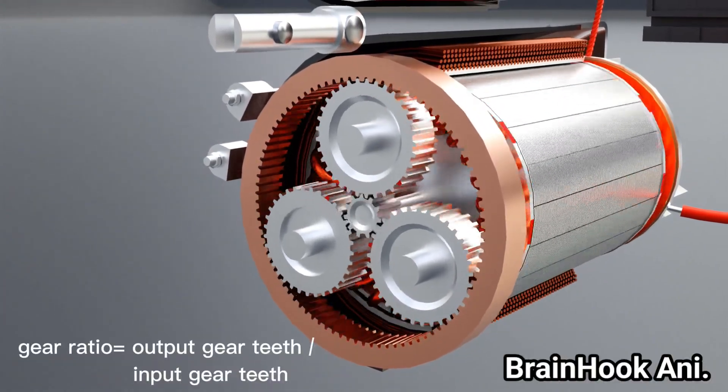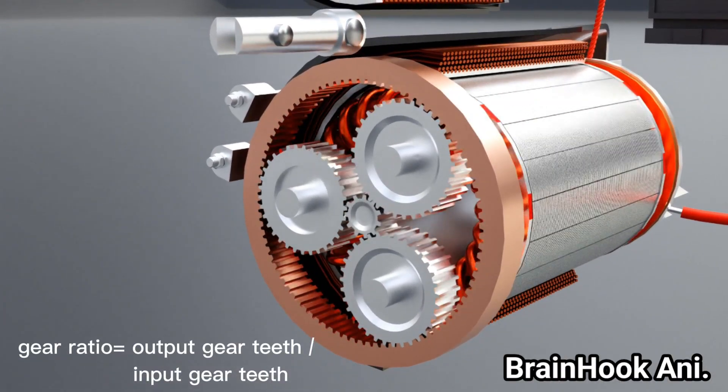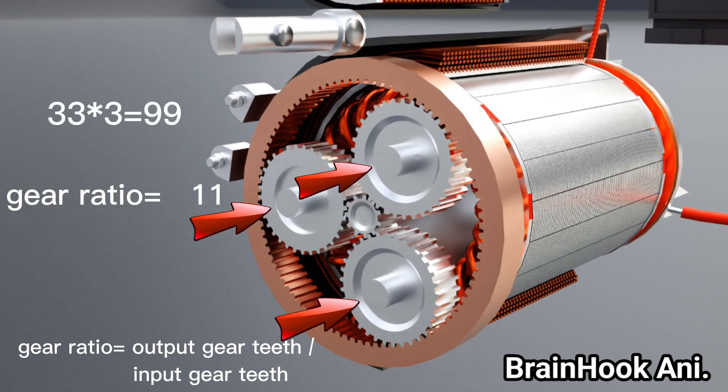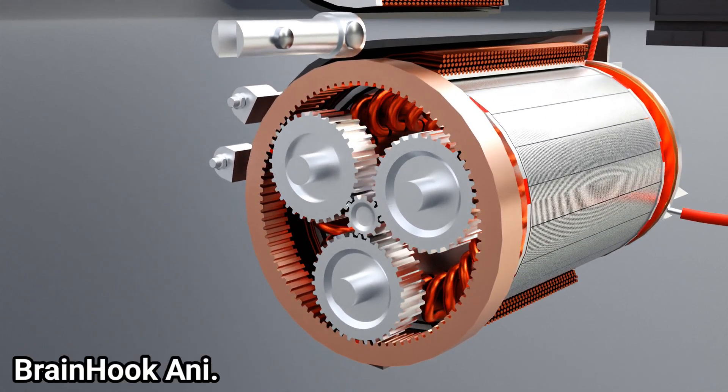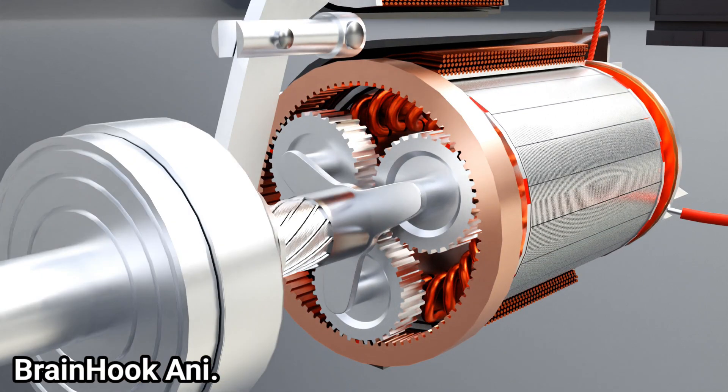We know, gear ratio equals number of teeth of output gear divided by number of teeth of input gear. Here, the number of teeth of sun gear or input gear is 11, and the number of teeth in each of the three output gears is 33, for a total of 99. Hence, gear ratio is 99 over 11. Enough torque is generated by combined gear reduction.